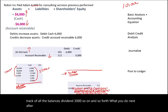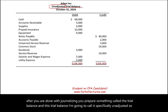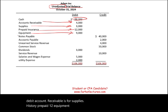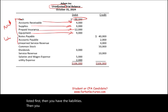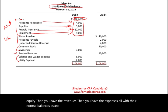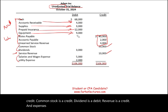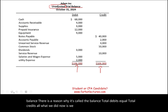After journalizing and posting, we prepare the trial balance — specifically the unadjusted trial balance. We list all accounts with their ending balances: cash $68,000 (debit), accounts receivable $4,000, supplies $3,000, prepaid $12,000, equipment $9,000 — assets first. Then liabilities including unearned revenue, then equity, revenues, and expenses — all with their normal balances. Assets have debit balances; liabilities, common stock, and revenues have credit balances; dividends and expenses have debit balances. Total debits equal total credits.